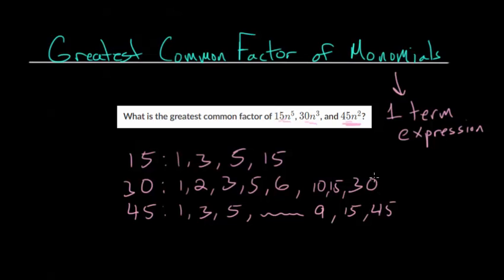Once we've written out all the factors of each of these numbers, now we're just looking for the greatest factor that they have in common. And you'll notice that for this one, 15 is the highest. So it can't be any number higher than 15, because that wouldn't divide evenly into 15.